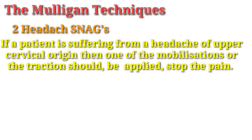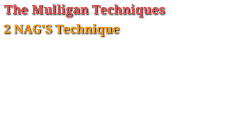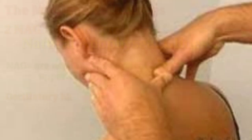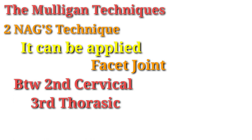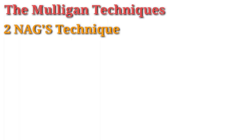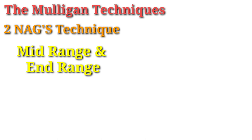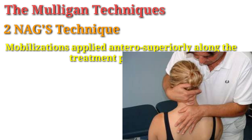Now let's talk about the second technique, which we call NAGS — Natural Apophyseal Glides. NAGS can be used for the cervical and upper thoracic spine. In the NAGS technique, we apply oscillatory mobilization, as opposed to the sustained glides used in SNAGS. Glides can be applied to the facet joint between the second cervical vertebra and the third thoracic vertebra, in mid-range and end-range. It can be applied anteriorly along with a treatment plan. NAGS technique is very useful for grossly restricted spinal movements.